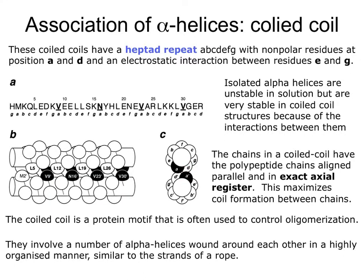The chains in a coiled coil have polypeptide chains aligned parallel in the exact axial register, which maximizes coiled coil formation between the chains. A coiled coil is a protein motif often used to control oligomerization. While dimers are shown, there are also trimers, tetramers, pentamers, and higher oligomeric states, essentially involving alpha helices winding around each other like strands in a rope.